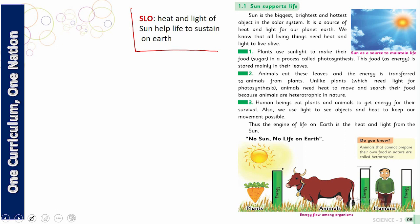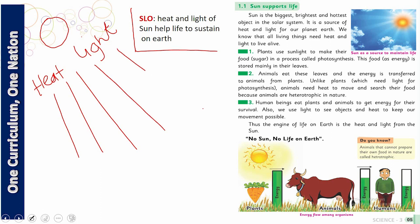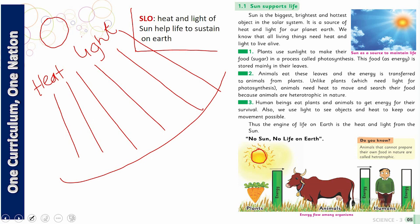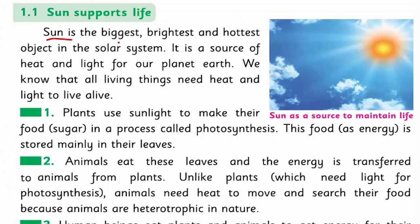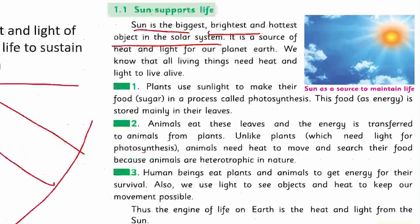Here, we are trying to explain that sunlight gives us two things on the surface of the Earth — heat and light. It is very important to know that two things come from the sun to Earth in the shape of rays, and we use these rays for our benefit. This is the sun, and it falls on plants and animals. Let's take a quick look at the text: 'The sun is the biggest, brightest, and hottest object in the solar system.'